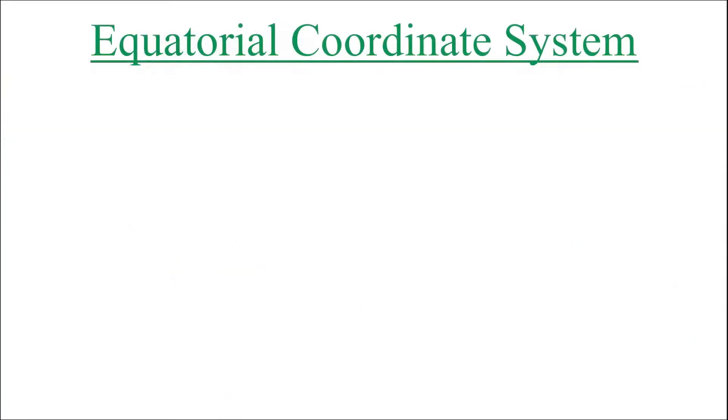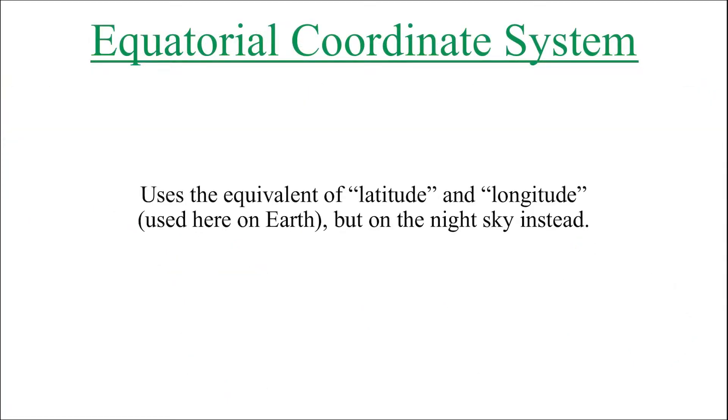The equatorial coordinate system is very similar to the geographic coordinate system used right here on Earth with latitude and longitude, except in this case we have those lines projected on the night sky.